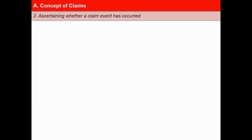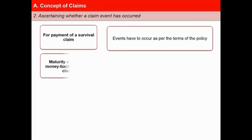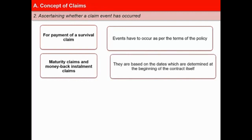Now let us discuss how to ascertain whether a claim event has occurred or not. For the payment of a survival claim, the insurer has to ascertain that the event has occurred as per the conditions stipulated in the policy. For maturity claims and money-back installment claims, claims are easily established as they are based on dates which are determined at the beginning of the contract itself.